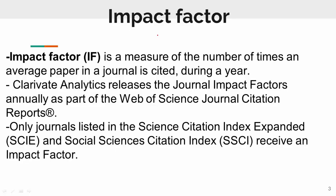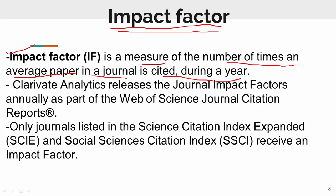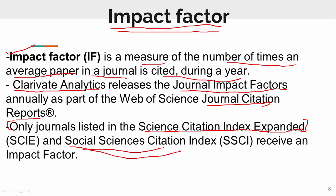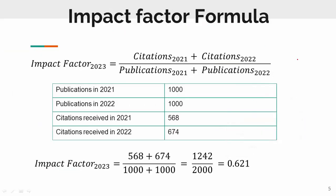Impact factor is the measure of the number of times an average paper in a journal was cited during a year. Clarivate Analytics releases the journal impact factors as part of their Journal Citation Reports. Only journals listed in SCIE (Science Citation Index Expanded) and SSCI (Social Sciences Citation Index) receive an impact factor. This is the formula they use to calculate it.